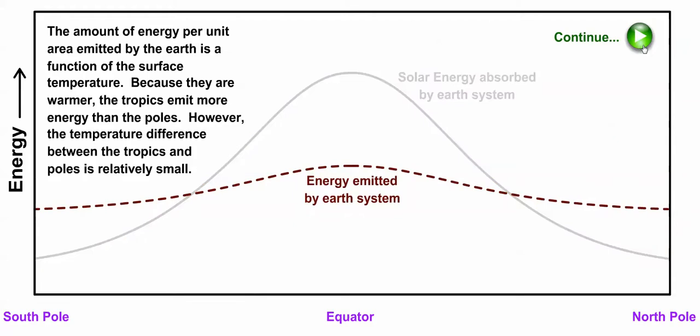On the lost side of the energy ledger, the amount of energy per unit area emitted by the earth depends on surface temperature. The tropics emit a bit more infrared radiation to space because they're warmer than higher latitudes. But the amount of infrared radiation emitted in the tropics still pales in comparison to the incoming solar radiation.